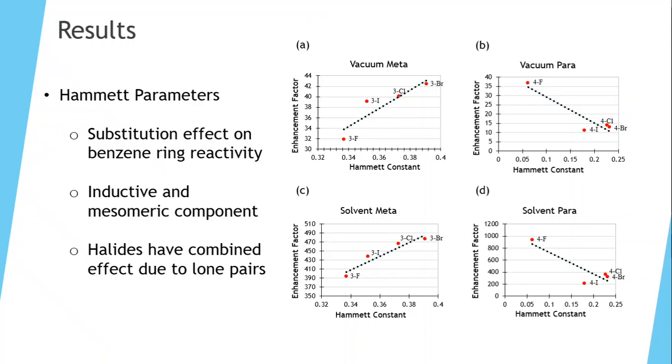We want to compare this data to Hammett parameters. These are empirical constants that define the reactivity of a benzene ring with different substitutions. It is comprised of both an inductive and a mesomeric component. Induction is due to the coulombic effect of drawing electrons, and a mesomeric component is due to the spreading of electrons around a benzene ring due to pi bonds.